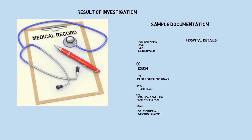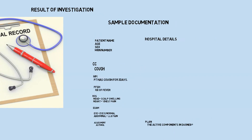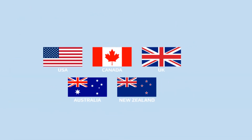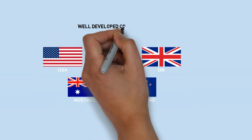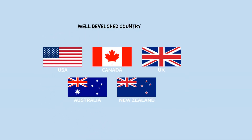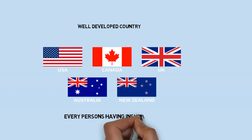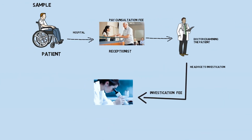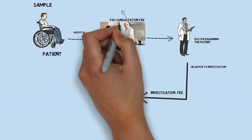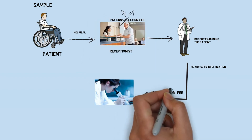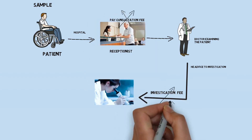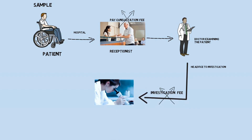The doctor concludes whether the patient is suffering from malaria fever, typhoid fever, or any other fever and prescribes medicine. In the US, UK, Canada, and Australia — these well-developed countries — each and every person has insurance, even newborn babies. When an insured person enters the hospital, they get benefits: no need to pay consultation fees, investigation fees, surgery bills, or anything. So how does the doctor get paid? What is the source of income for the doctor?